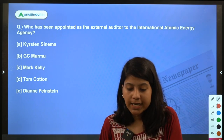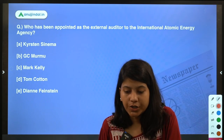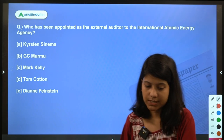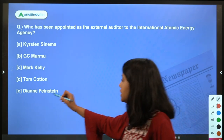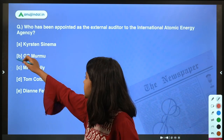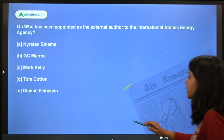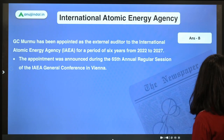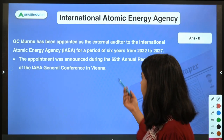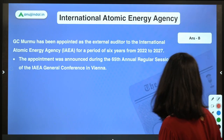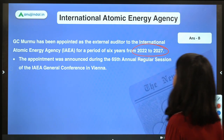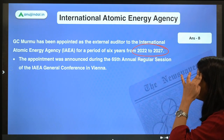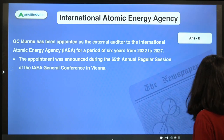Question 5: Who has been appointed as the external auditor to the International Atomic Energy Agency (IAEA)? The right answer is GC Murmu, the Comptroller and Auditor General of India. He has been appointed as the external auditor for a six-year term from 2022 to 2027.